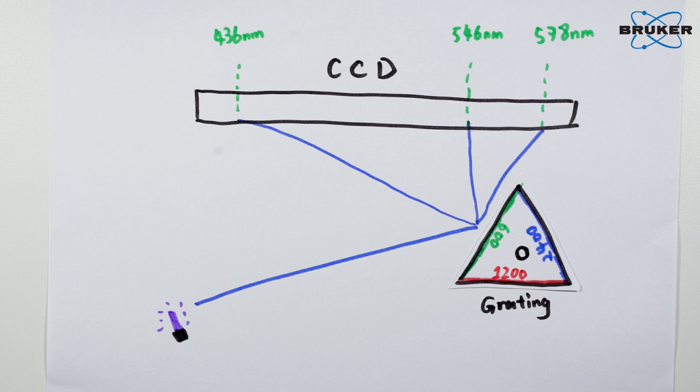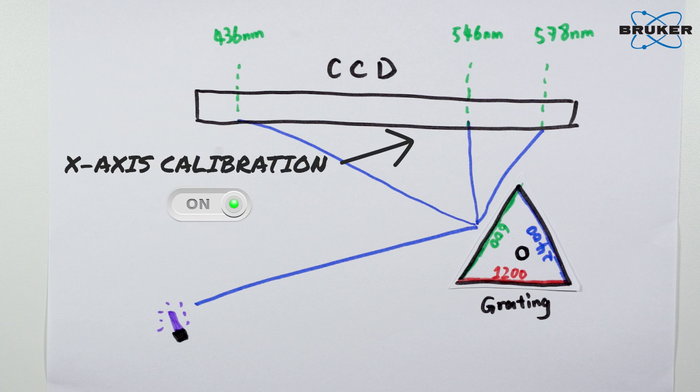From the measurement of the calibration lamp, we can easily calibrate the x-axis of the Raman spectra.